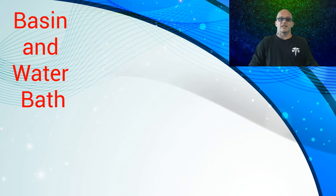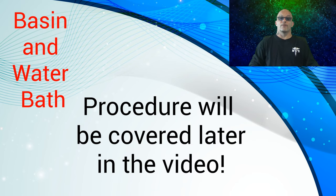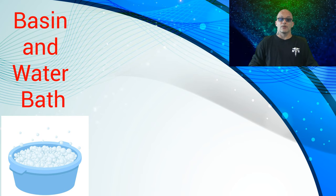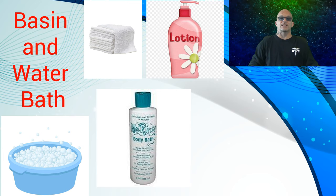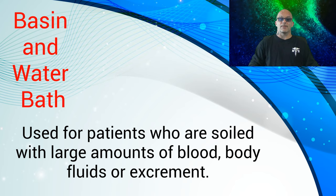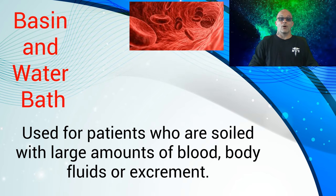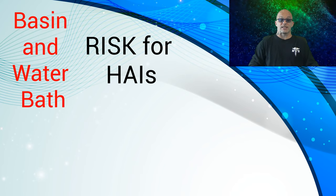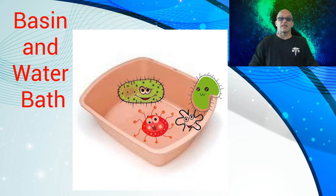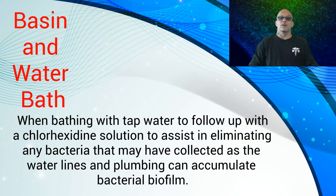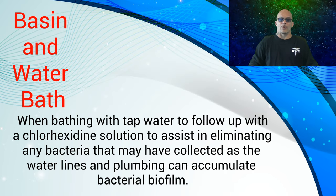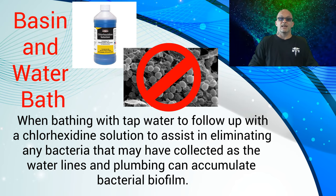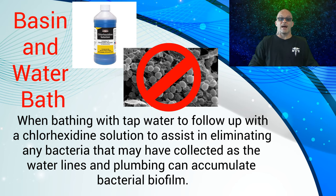Another type of bath is the basin and water bath, which we will discuss in detail later in the video. This bath includes a disposable basin with water, washcloths, lotion, and a pH-balanced no-rinse soap or chlorhexidine solution. This type of bath is used for patients who are soiled with large amounts of blood, body fluids, or excrement. Basin and water baths are considered a potential risk for healthcare-acquired infections, as the basin can become a reservoir for microorganisms. When bathing with tap water, we must follow up with a chlorhexidine solution, as water lines and plumbing can accumulate bacterial biofilm.